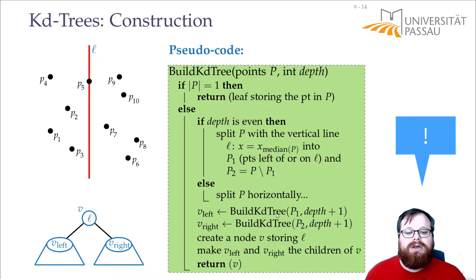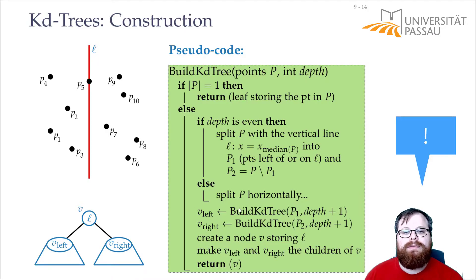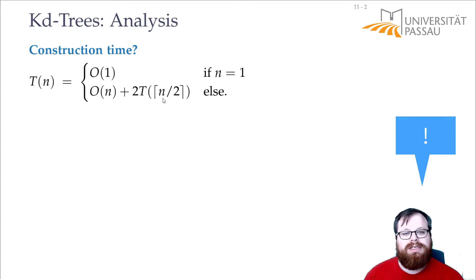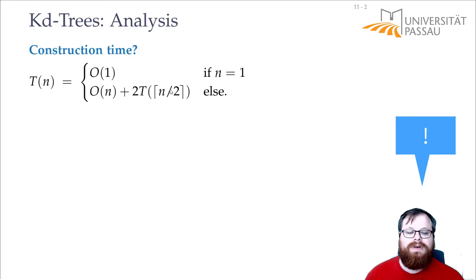Then we recursively call the function again, twice, with half of the points. So we need O(n) plus two times however long this function needs for n/2 points. This is our recurrence relation: O(1) if we have only one point, otherwise O(n) plus 2·T(n/2).